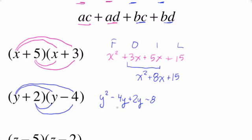Again, we have like terms. These are our like terms. A negative 4Y plus 2Y. So we end up with a Y squared minus 2Y minus 8. Final answer.